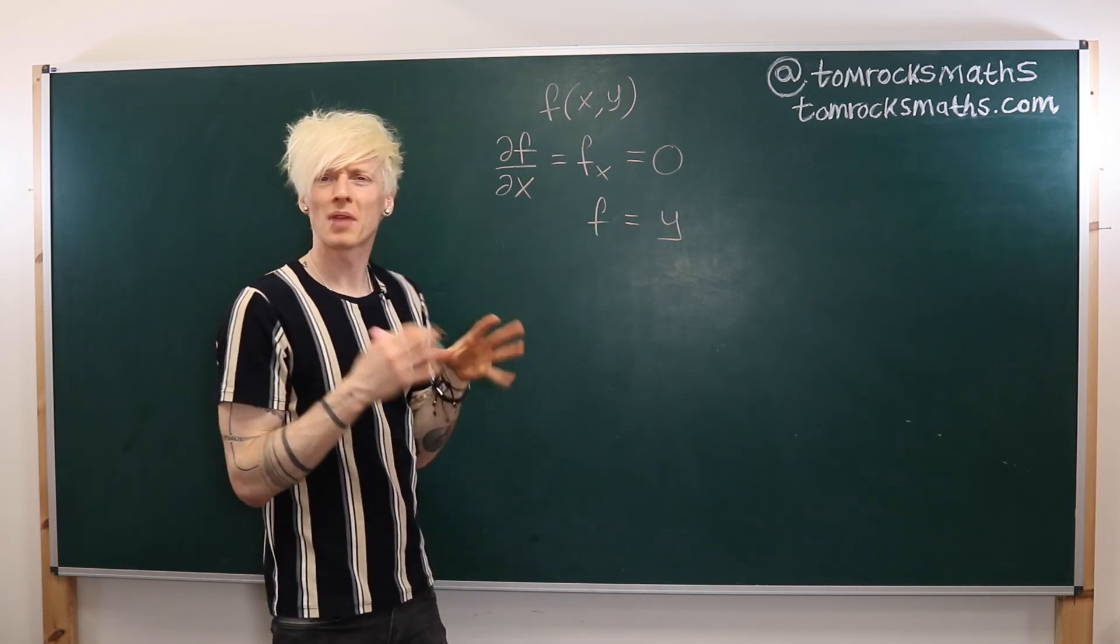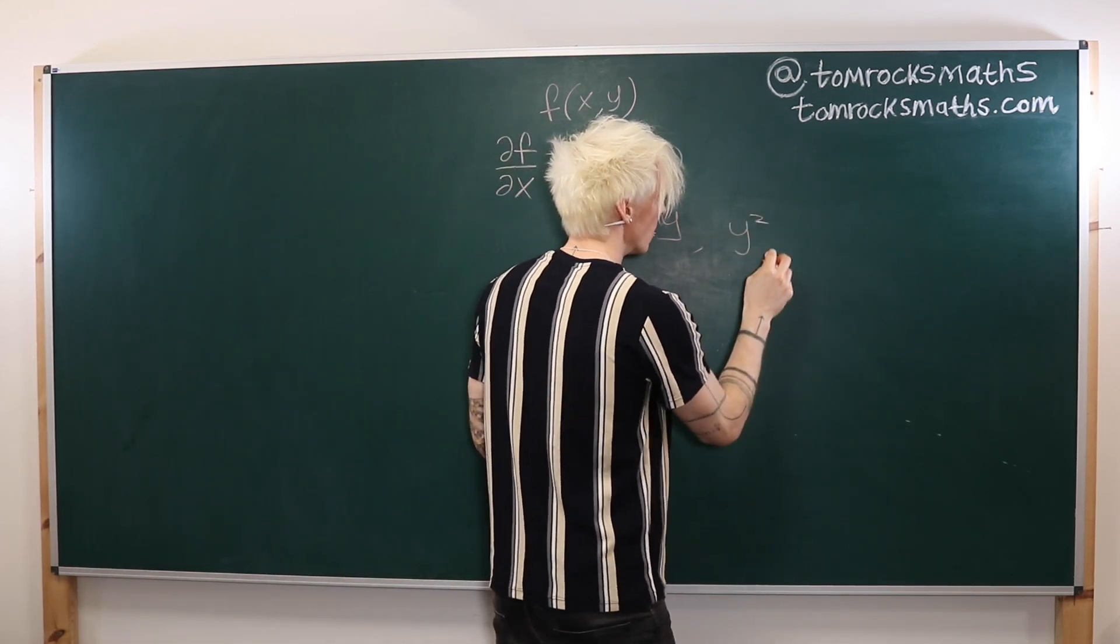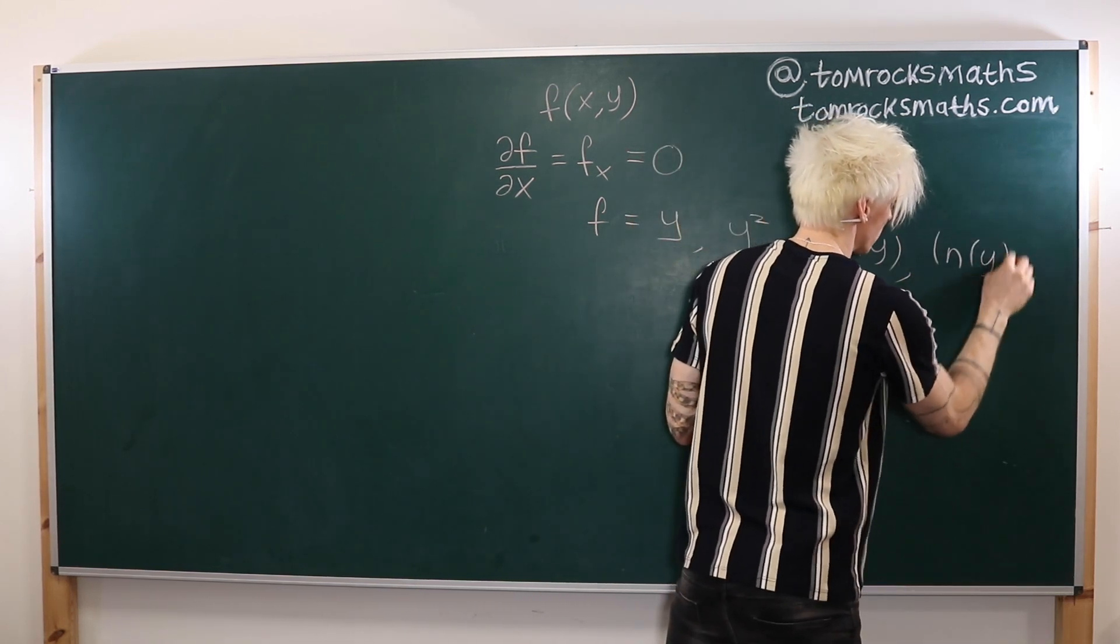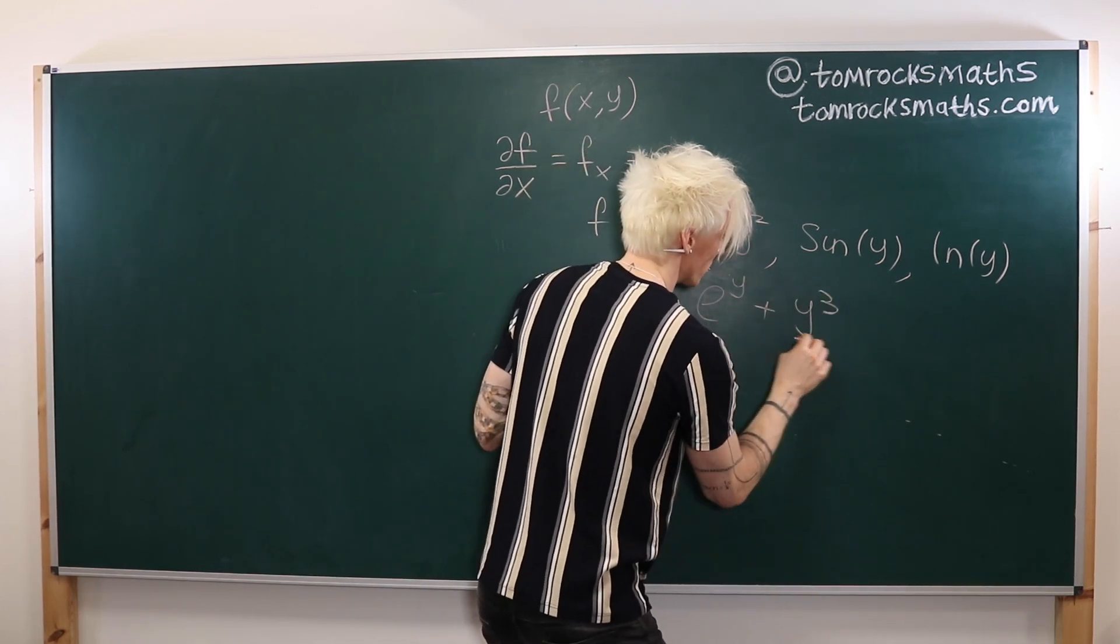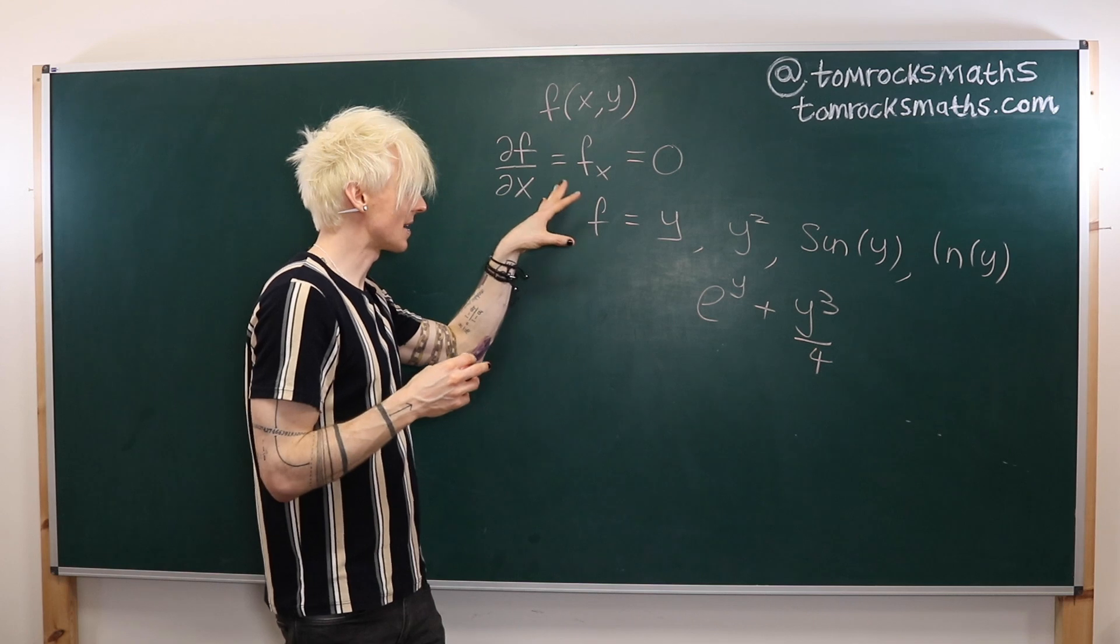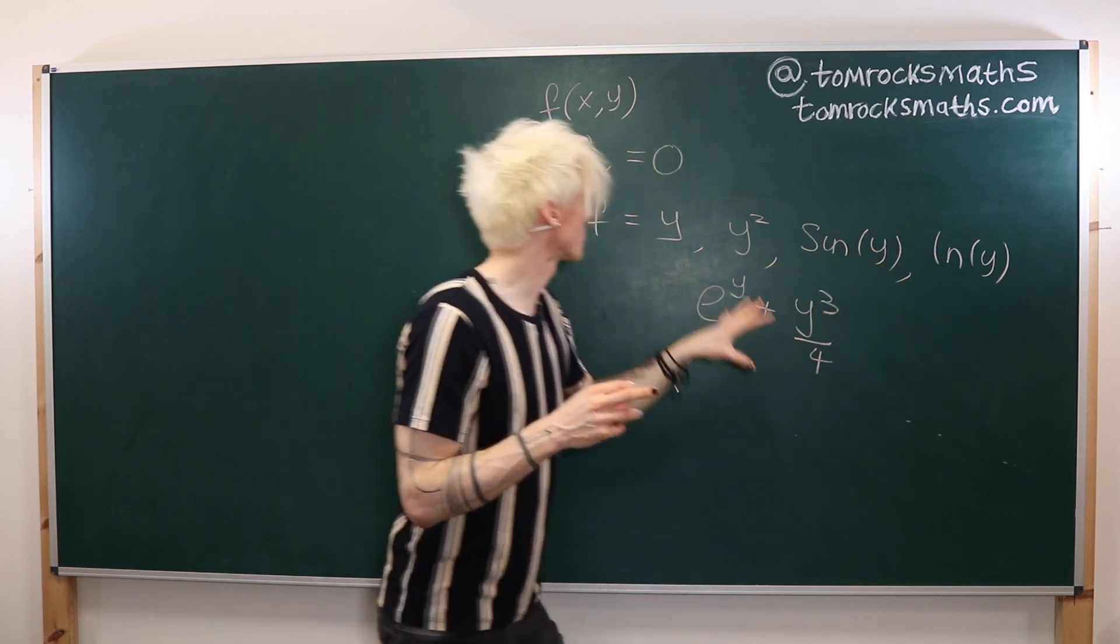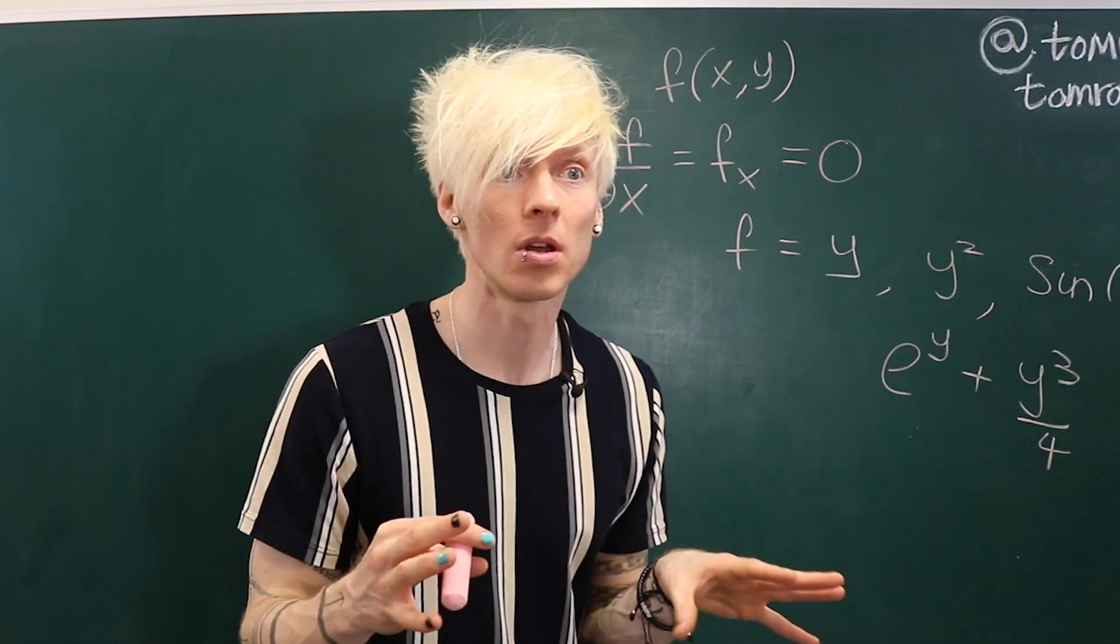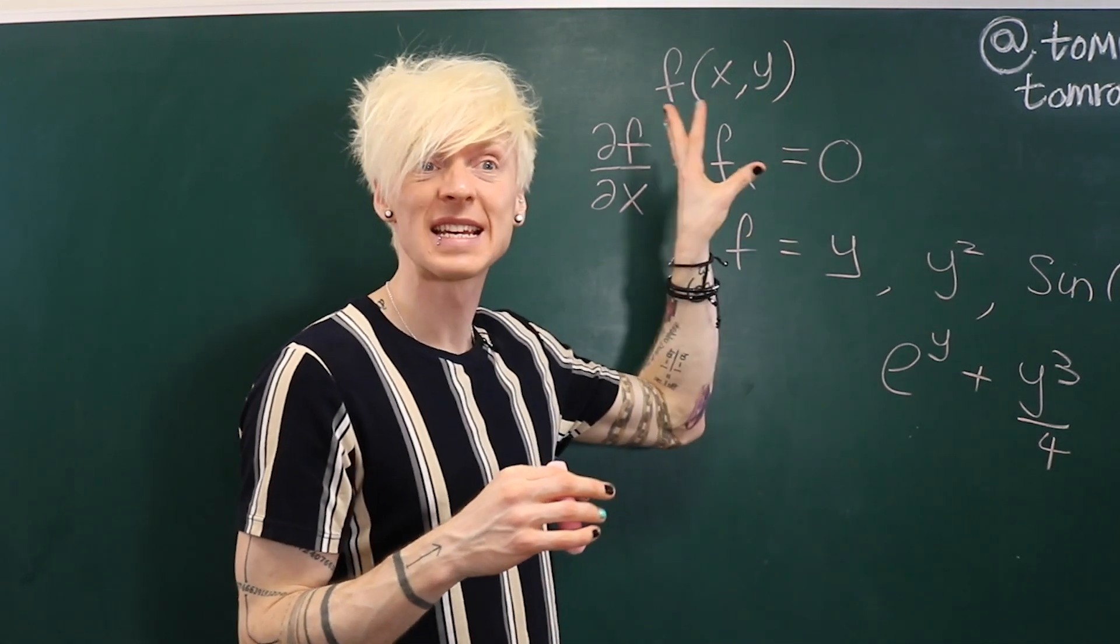But there was nothing special about me picking y. What if I'd had y squared or maybe even sine of y or log of y or even e to the y plus y cubed over four for example. All of these functions when you take the x partial derivative will give you zero. So they are all valid solutions to this PDE. So in fact any function at all of the variable y will differentiate with respect to x to give us zero.